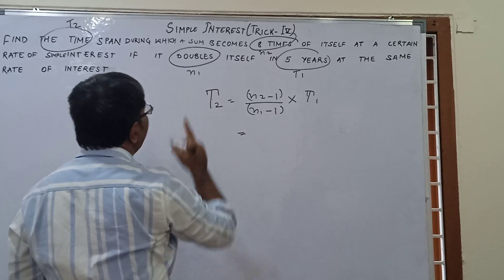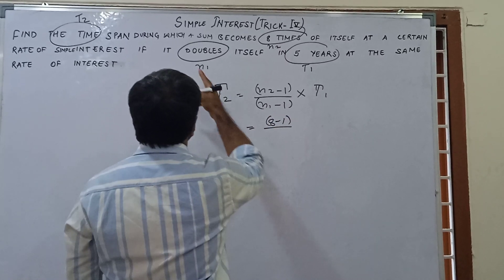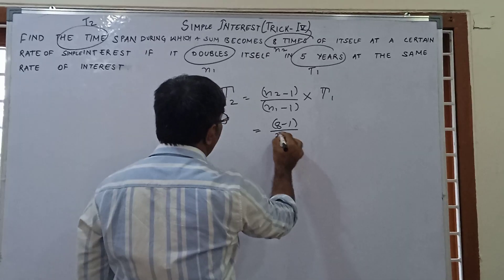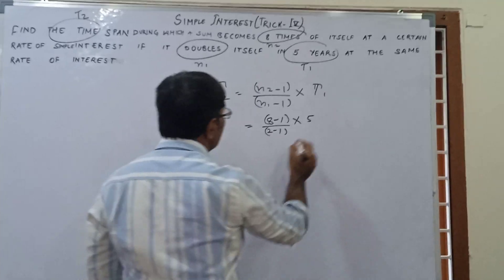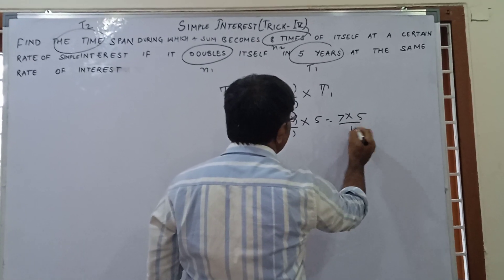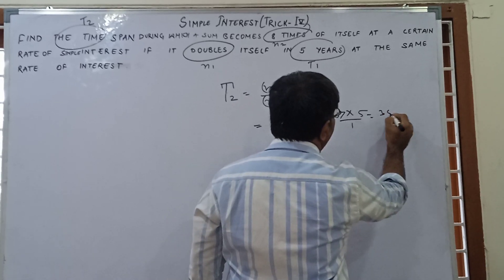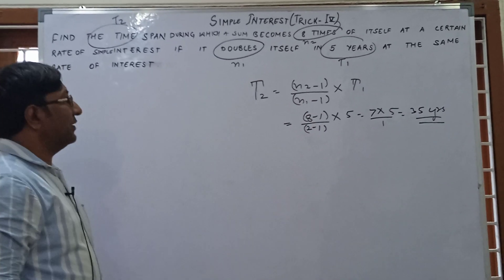In this question, the second is 8, so this is 8 minus 1. The first one is double, so 2 minus 1. The time period is given 5. So 8 minus 1 is 7, 2 minus 1 is 1, so the correct answer is 35 years.